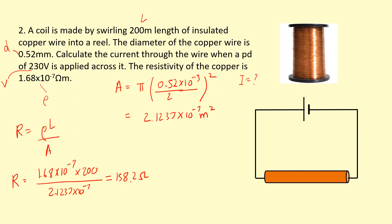Now that we have the voltage and resistance, we can use Ohm's Law. I = V/R = 230 / 158.2, which gives a current of 1.45 amps flowing through this conductor.